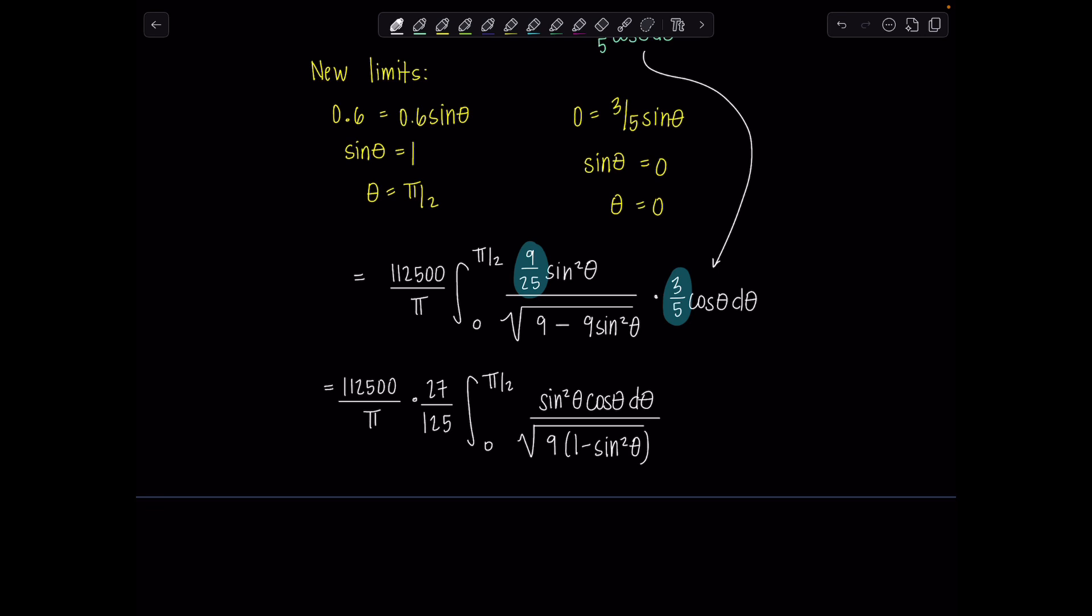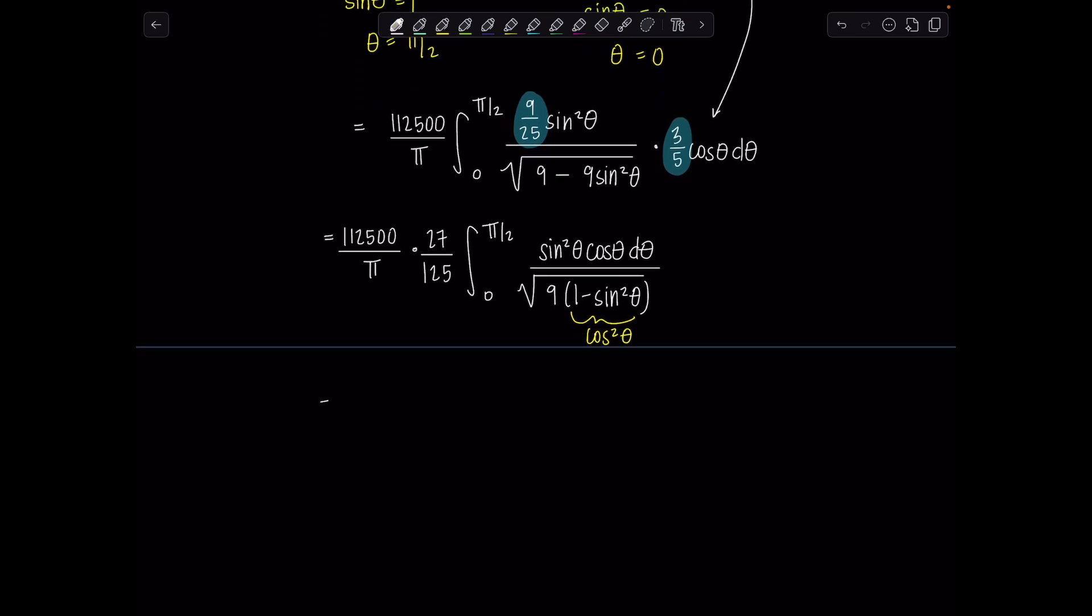Now remember, we do trig subs so we can use our Pythagorean identities and simplify the integrand. So let's replace cosine squared theta with that 1 minus sine squared. Square root of all of that means the denominator is now 3 cosine theta. Can I simplify that constant outside a wee bit? Yes. 112,500 cancels with 125 and becomes 900. So now we've got 900 over pi times 27. Then we have integral 0 to pi over 2, sine squared theta, cosine theta, d theta, over just 3 cosine theta. Cosine theta cancels.